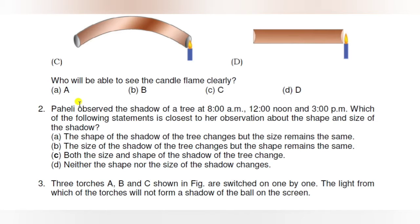The most appropriate answer is option C — both the size and shape of the shadow of the tree change. We have to read all the options first, understand them, and then answer.